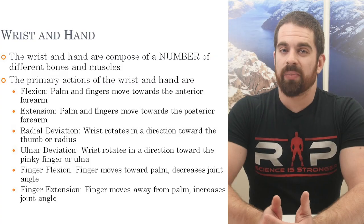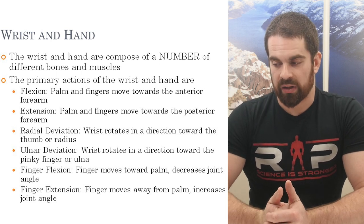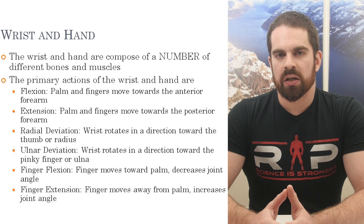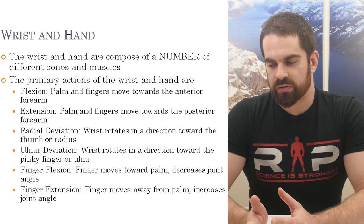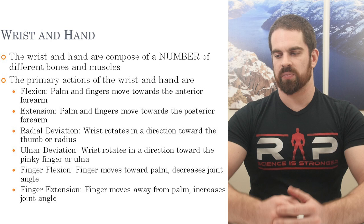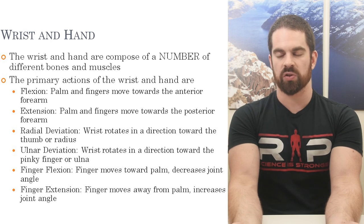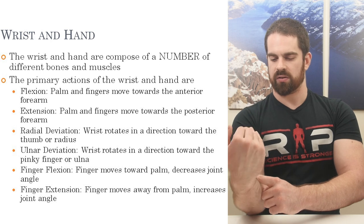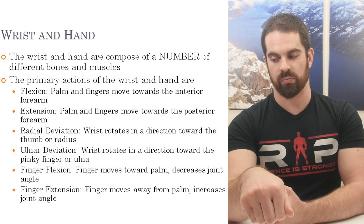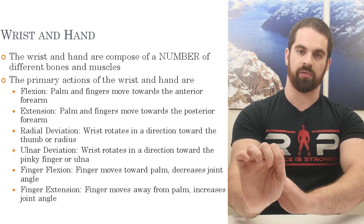Okay, so that's the elbow — not too bad. Most of those muscles we're pretty familiar with, and most actions are self-explanatory. The wrist and hand are a little more complicated. When talking about actions at the wrist and hand, we'll primarily see wrist flexion and extension. For wrist flexion, the palm and fingers move towards the anterior forearm — trying to bring your fingers close to your forearm. Extension is the opposite: the palm and fingers move towards the posterior side of the forearm, like a wrist-up position.